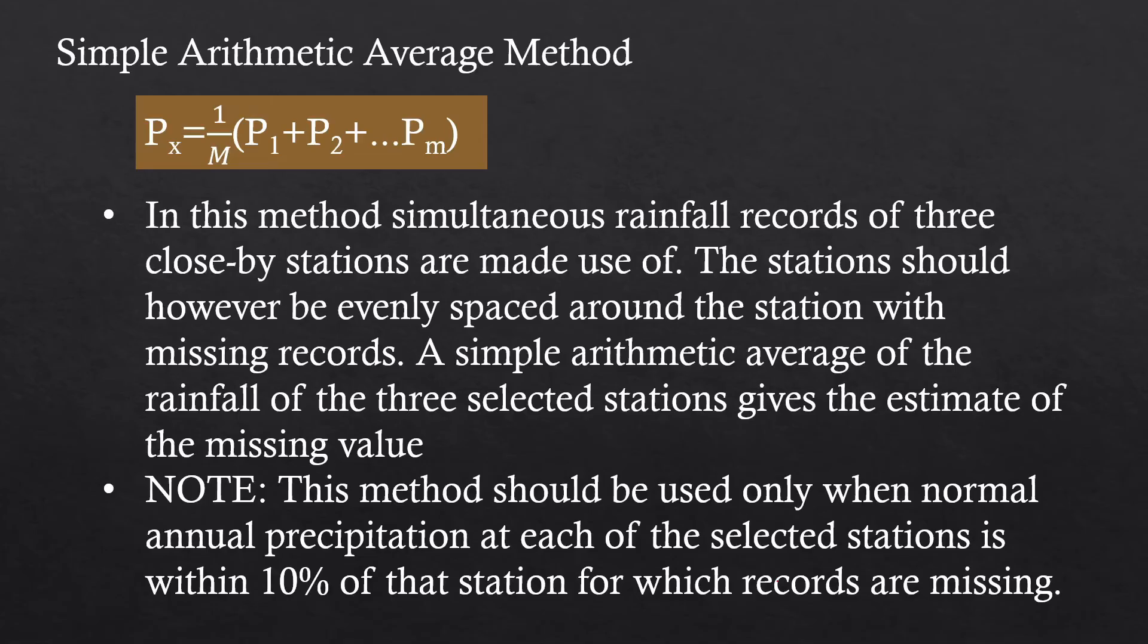First, we're going to tackle the Simple Arithmetic Average method. In this method, simultaneous rainfall records of three close-by stations are used, with stations evenly spaced around the station with missing records. A simple arithmetic average of the rainfall from the three selected stations gives the estimate of the missing value. However, note that this method should only be used when the normal annual precipitation at each of the selected stations is within 10% of the station for which records are missing. Let's explore this example to give you an overview of its application.